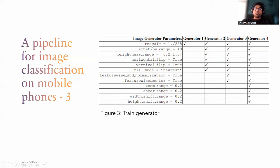This section lists the train generators we used. For example, rescaling is compulsory when training and testing the model. There are additional parameters in the train generator such as rotation range, brightness range, horizontal flip, vertical flip, and so on. It is important to be aware of the resulting image when using a train generator, because with medical images the train generator can change the category of a specific class and result in increased false positive rate when testing the final model.